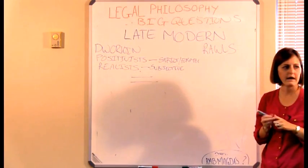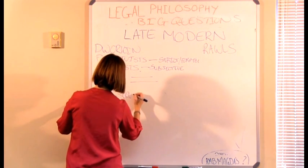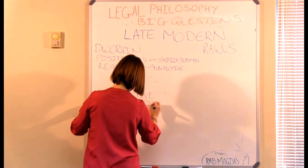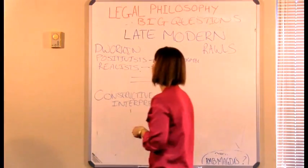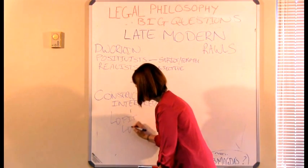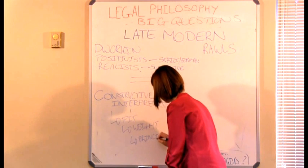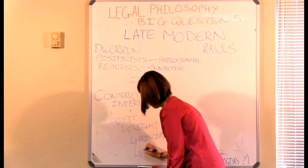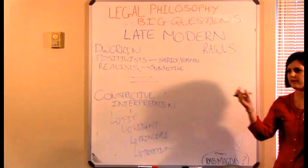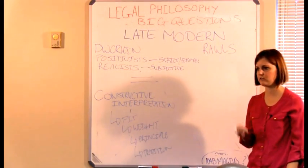He comes up with this idea called Dworkin's constructive interpretation. He says when there is a difficult case and there are two possible answers, the judge can follow this process and decide which answer is actually better.